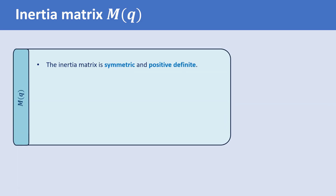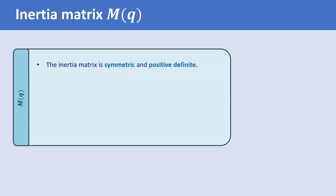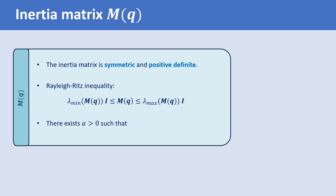The second property of the inertia matrix is also related to its positive definite property. We know from the Rayleigh-Ritz inequality that for a square matrix M, the inequality λ_min(M) I ≤ M ≤ λ_max(M) I holds, where λ_min(M) is the minimum eigenvalue, λ_max(M) is its maximum eigenvalue, and I denotes the identity matrix. Note that λ_min and λ_max of M are both functions of the vector Q. The second property of M is that there exists a real positive number α, independent of Q, such that αI ≤ M(Q).